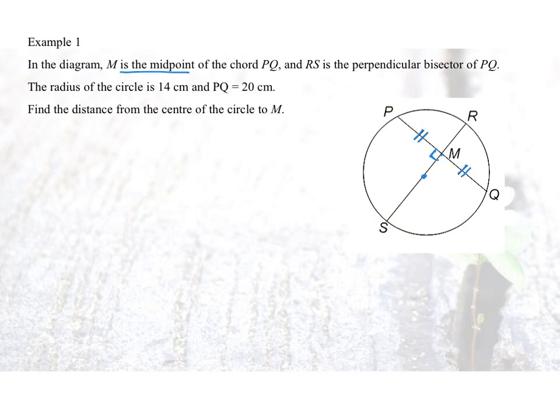And they tell us that RS is the perpendicular bisector of PQ. That means center O is somewhere along this line RS. The radius of the circle is 14.